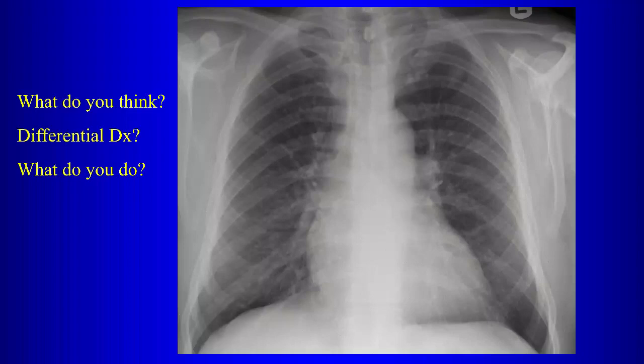The differential for a solitary pulmonary nodule: three things make up about 95%. Those are lung cancer, granuloma or inflammatory lesion, and hamartoma — with hamartoma a distant third. Those three make up over 95% of the differential diagnosis for solitary pulmonary nodules.